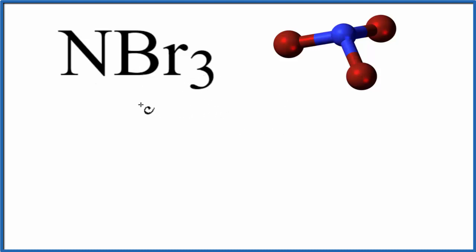Let's count the valence electrons for NBr3 first. Nitrogen's in group 15, sometimes called 5A, we have 5 valence electrons. Bromine, group 17, sometimes called 7A. It has 7 valence electrons, we have 3 bromines though. So 5 plus 21, 26 total valence electrons for NBr3.